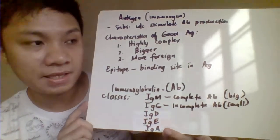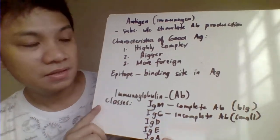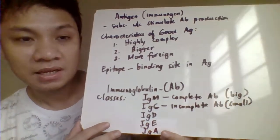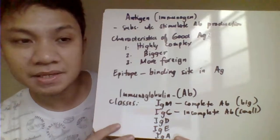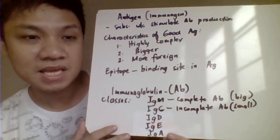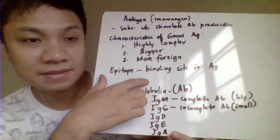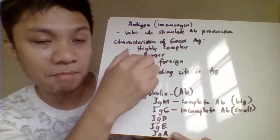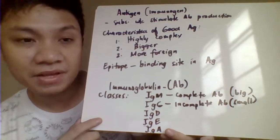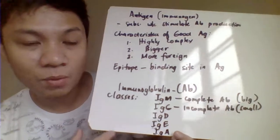Antigens or immunogens are substances that stimulate antibody production. Characteristics of a good antigen include bigger structure and complex structure — the bigger the size and the more complex the structure, the more immunogenic and the more it can stimulate our immune response. The term epitope refers to the binding site of antibodies on the antigen. Immunoglobulins, also called antibodies, include IgM — the biggest, a pentamer with five monomer units.